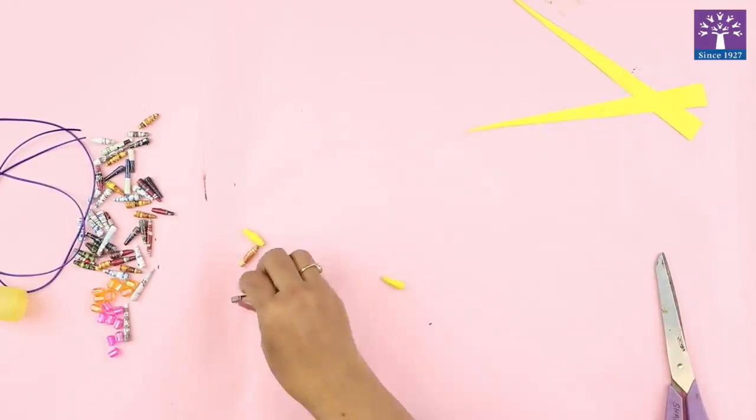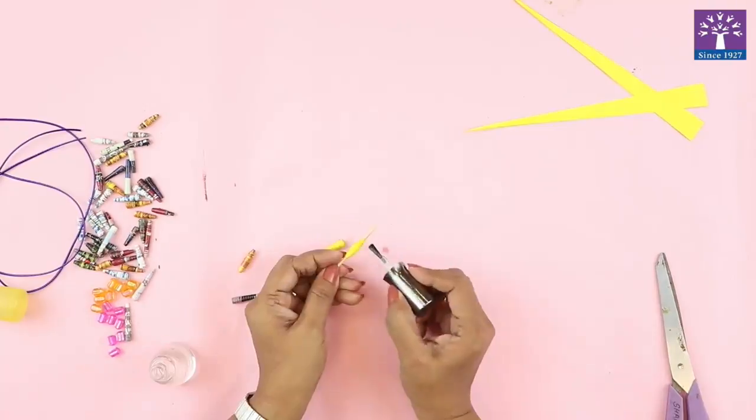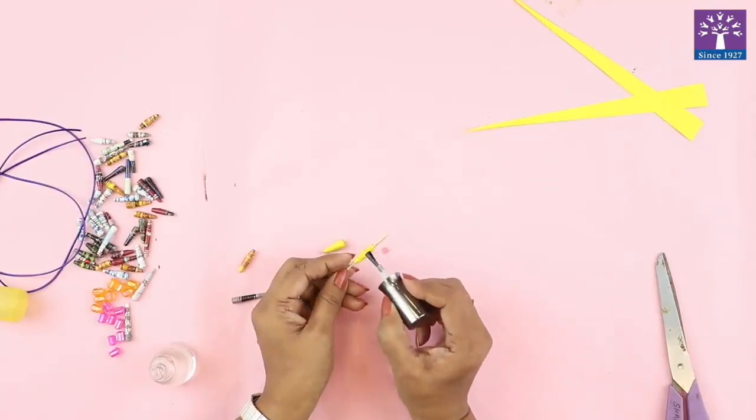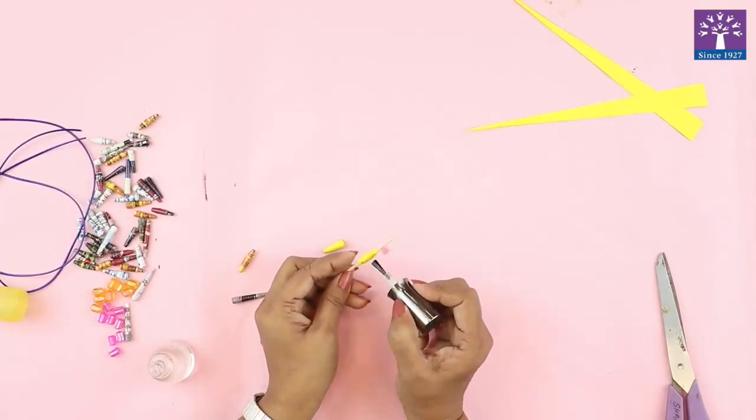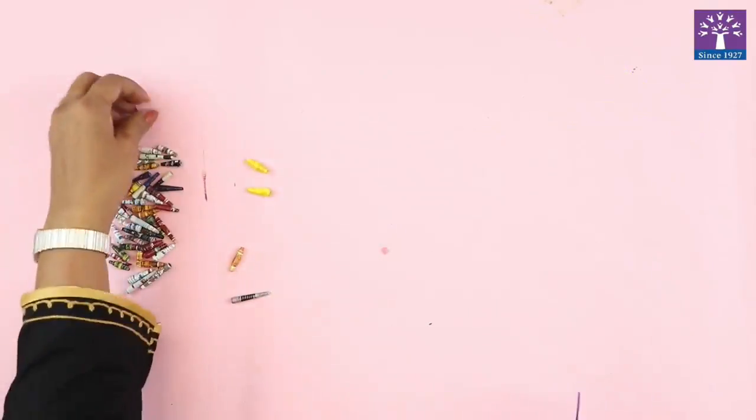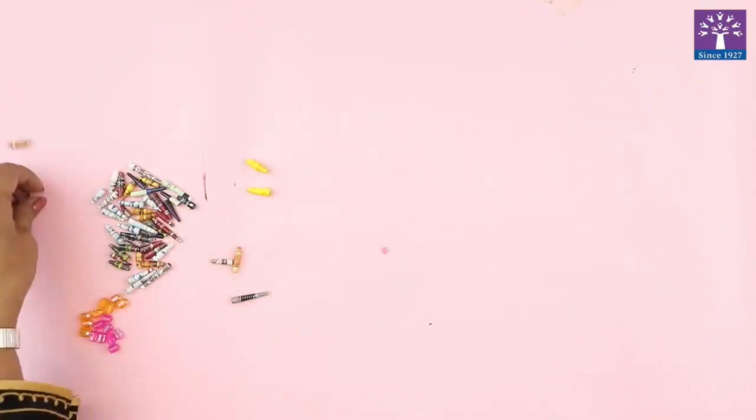Once you have made the beads, we will apply transparent nail paint on these beads. Because of this nail paint that we are applying, it is giving a glossy look and also making it waterproof. Now we have prepared the beads with the magazine sheets.